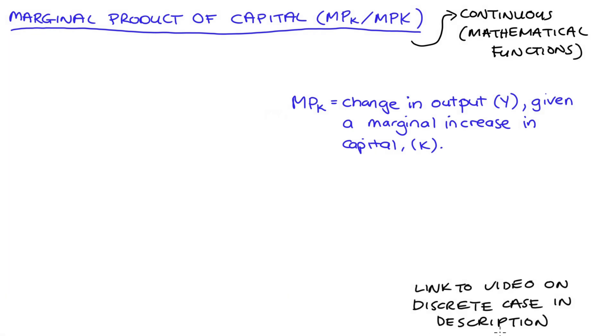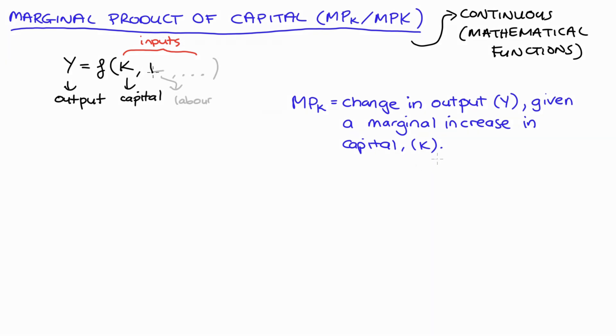Just to start at the beginning, we're going to have a production function that tells us that our output Y depends on, or is a function of, some inputs to production, which will include capital (notated K). Often we also include labor L, and sometimes we might include other stuff like land T or other inputs.